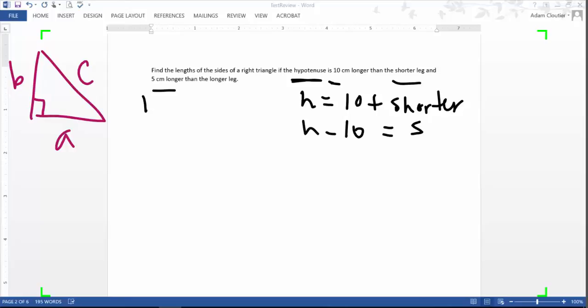Same thing over here. Rather than saying hypotenuse is 5 longer than the longer leg, I want to flip this around and say longer is equal to the hypotenuse minus 5. So that being said, going back to the Pythagorean theorem, I can say A squared plus B squared equals C squared. And now all I have to do is plug in these two equations that we just found out.